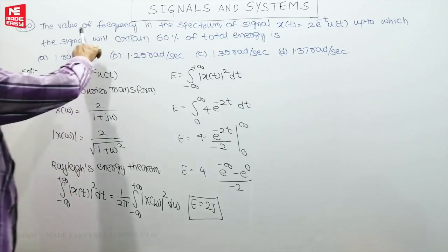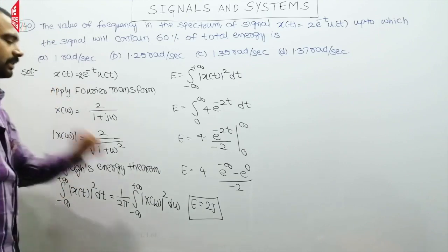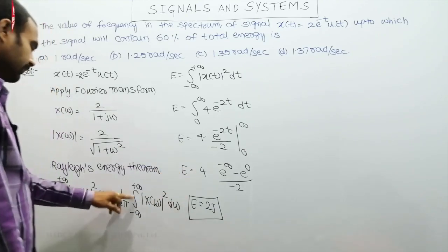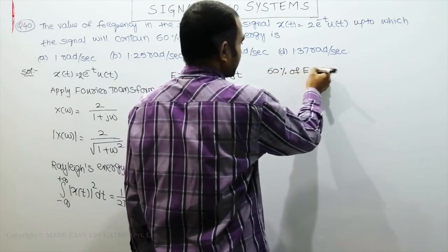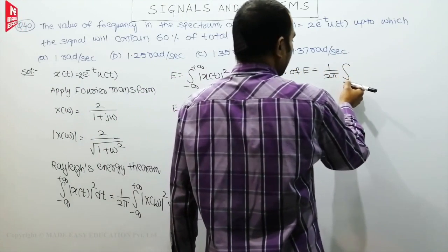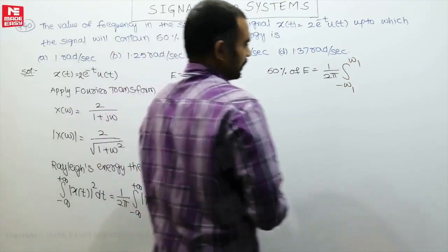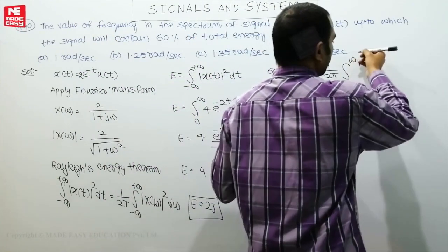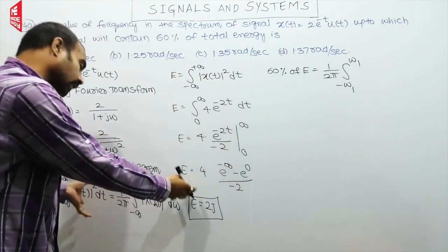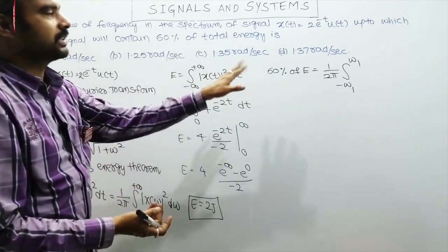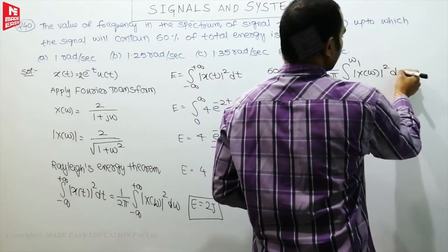The given condition is the frequency up to which the signal contains 60% of total energy. Total energy is 2 joules, so 60% is required. We write: 60% of E = (1/2π) integral from −ω₁ to ω₁ of |X(ω)|² dω, where ω₁ is the frequency value we need to find.